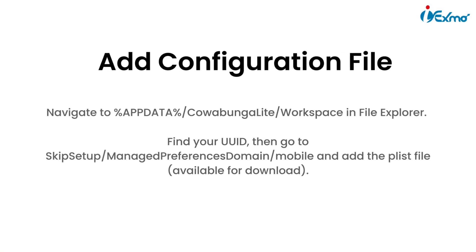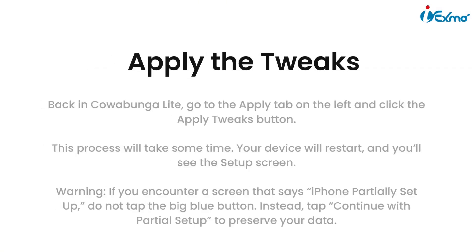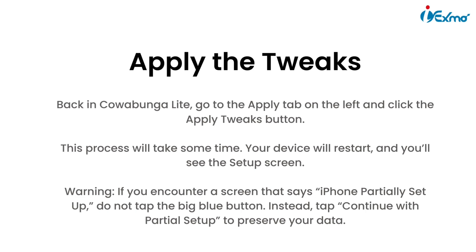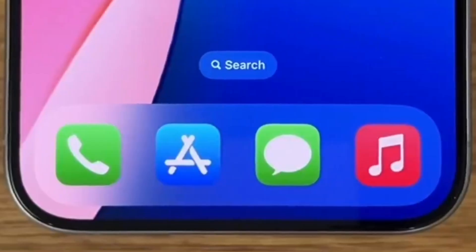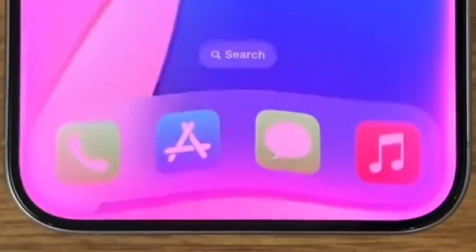Add the plist file, then back in Cowabunga Light go to the Apply tab on the left and click the Apply Tweaks button. This process will take some time and your device will restart. You'll see the setup screen, and there you have it — now you can enjoy the new Siri UI and the fantastic Apple Intelligence features on your iOS 18 device.